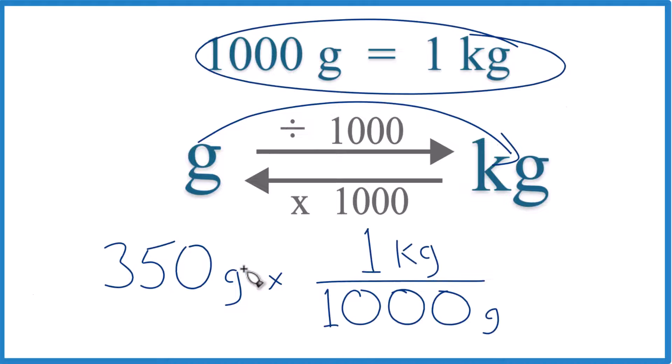When we do it, grams on the top and bottom, they cancel out. 350 times 1 kilogram, that's 350 kilograms, divided by 1,000. Get the same answer we got before, 0.35 kilograms. Dr. B converting 350 grams to kilograms. Thanks for watching.